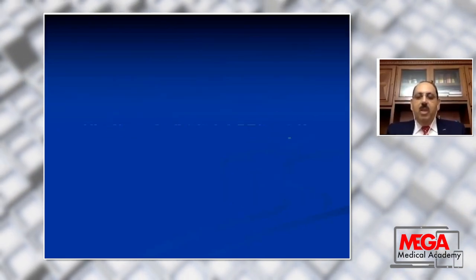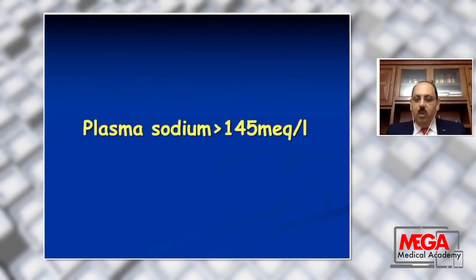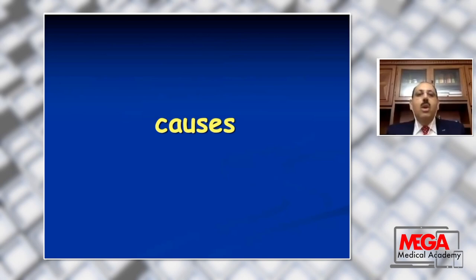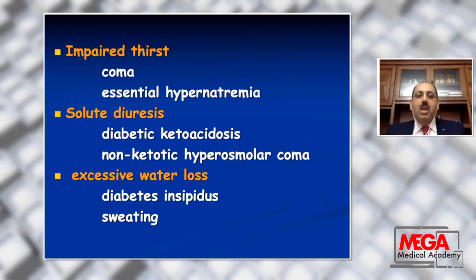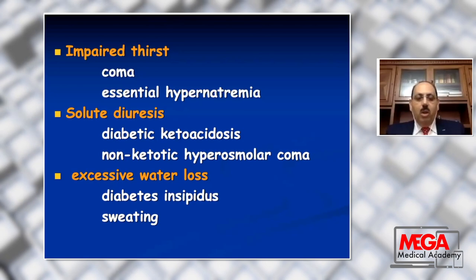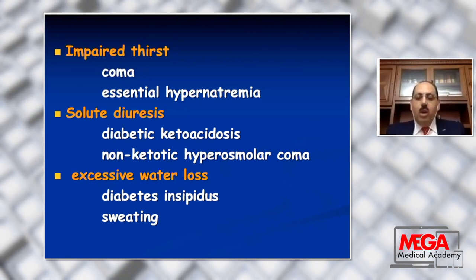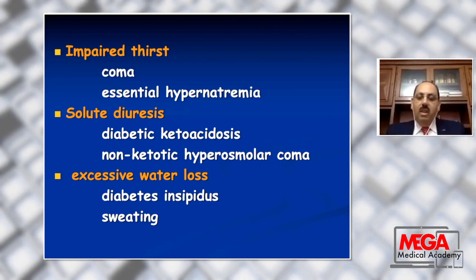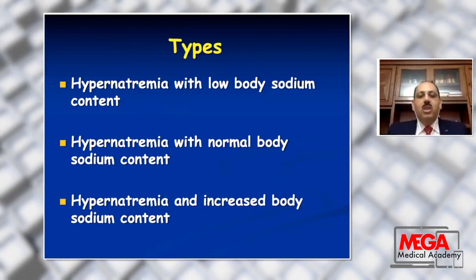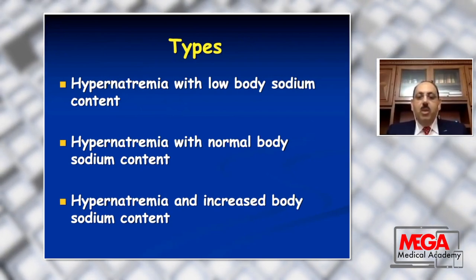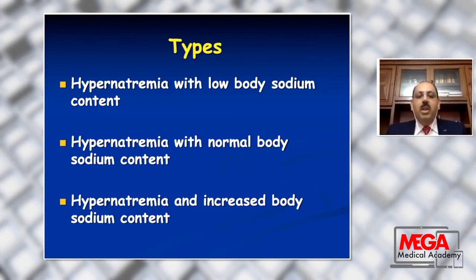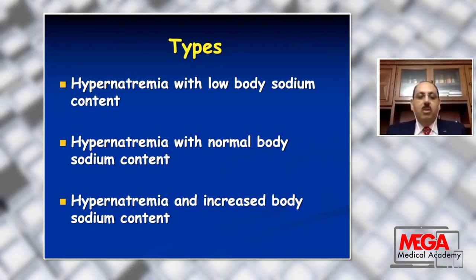Hypernatremia means plasma sodium greater than 145 mEq/L. The causes include contracted volume or water deficit, impaired thirst as in coma, essential hypernatremia, osmotic diuresis in case of diabetic ketoacidosis, and hyperosmolar non-ketotic coma. Also, excessive water losses in central or nephrogenic diabetes insipidus and excessive sweating. The types are hypernatremia with low body sodium content — hypovolemic hypernatremia; hypernatremia with normal body sodium content — euvolemic hypernatremia; and hypernatremia with increased body sodium content — hypervolemic hypernatremia.